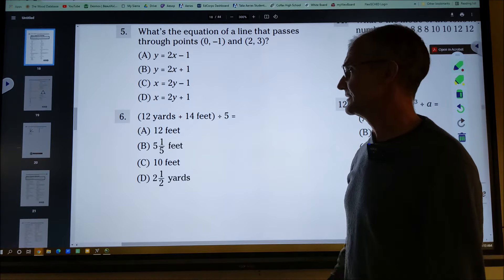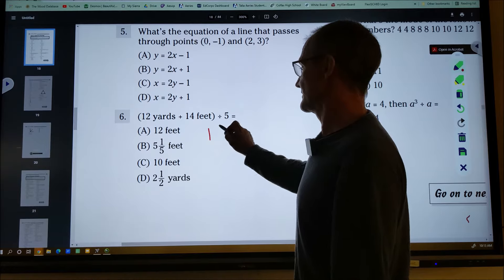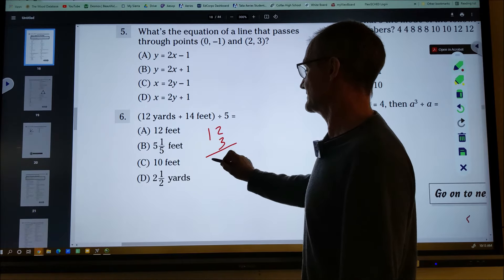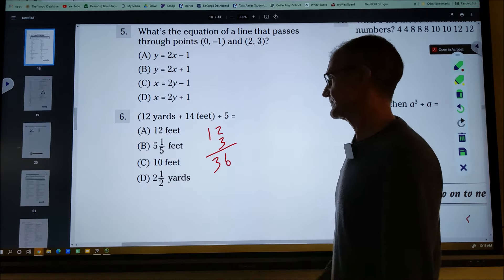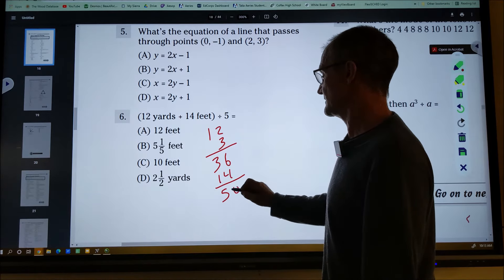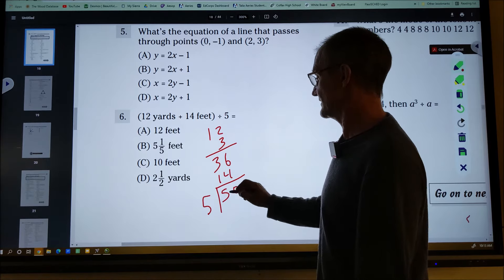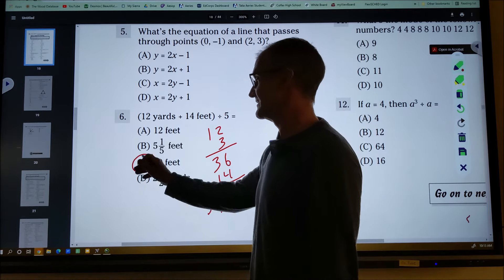Most likely they're going to be, answer is going to be in feet. I'm going to take that 12 yards, multiply it by three feet to get a total of 36 feet. Plus those 14 feet will give me a total of 50 feet divided by five will give me 10 feet. So there's my answer right there, 10 feet.